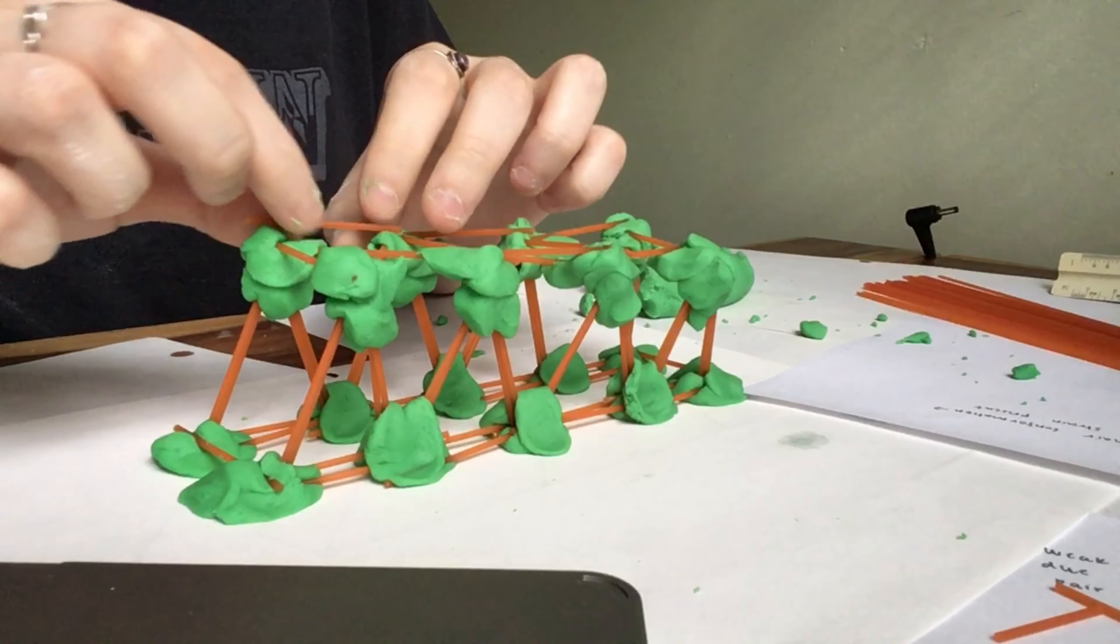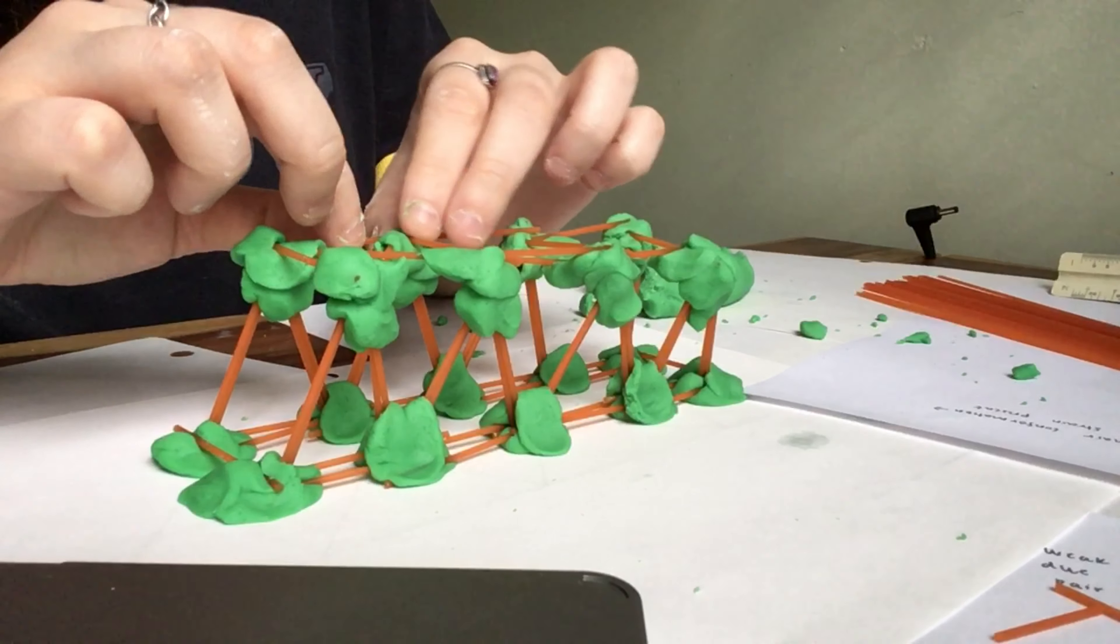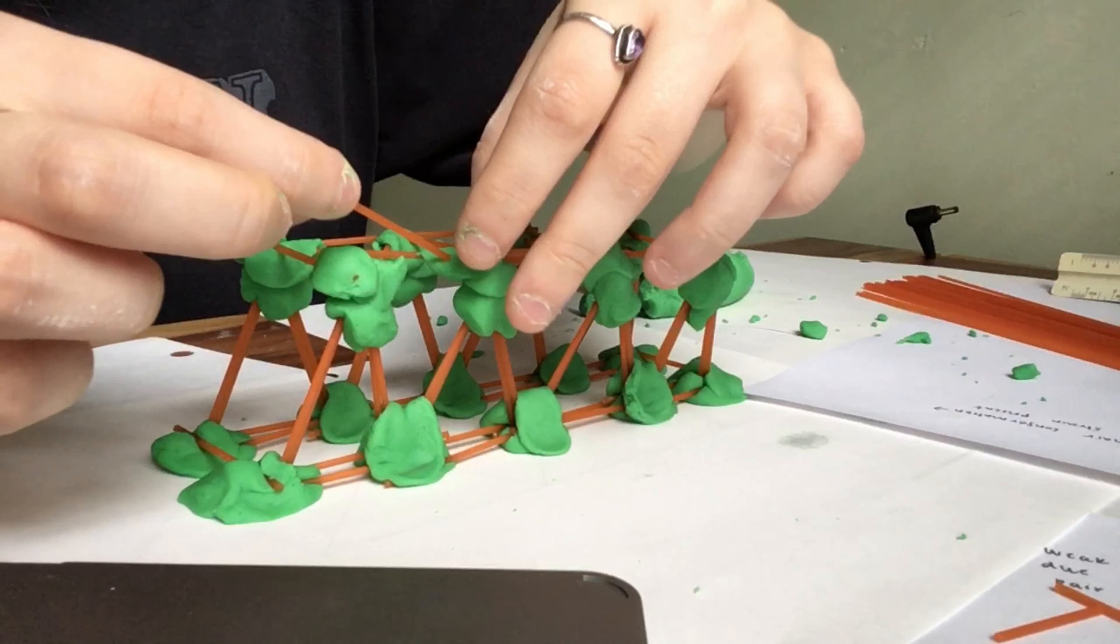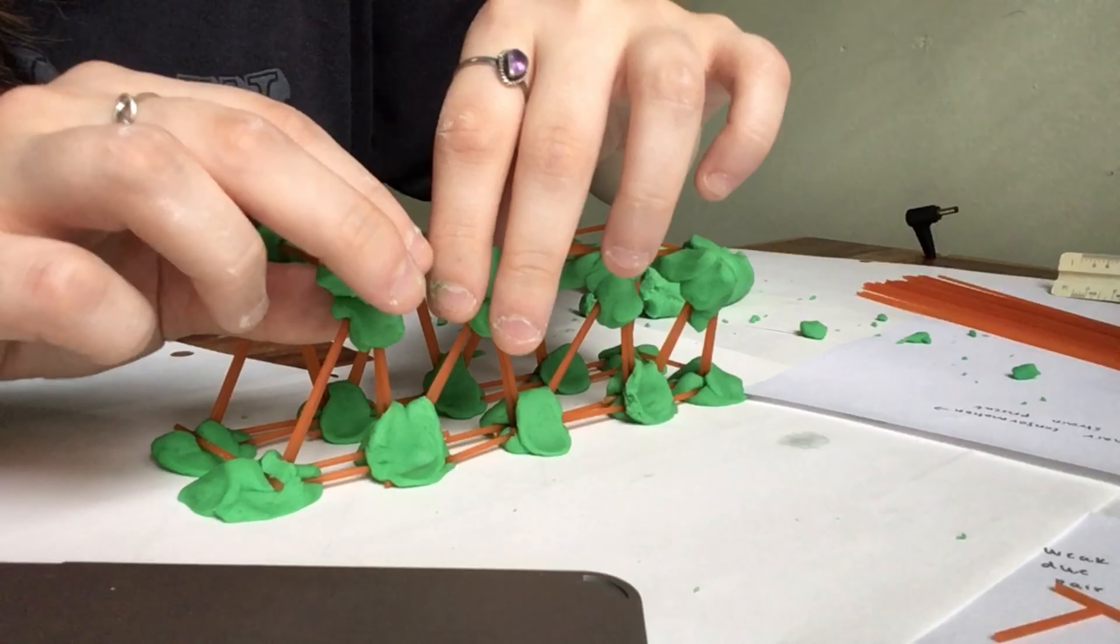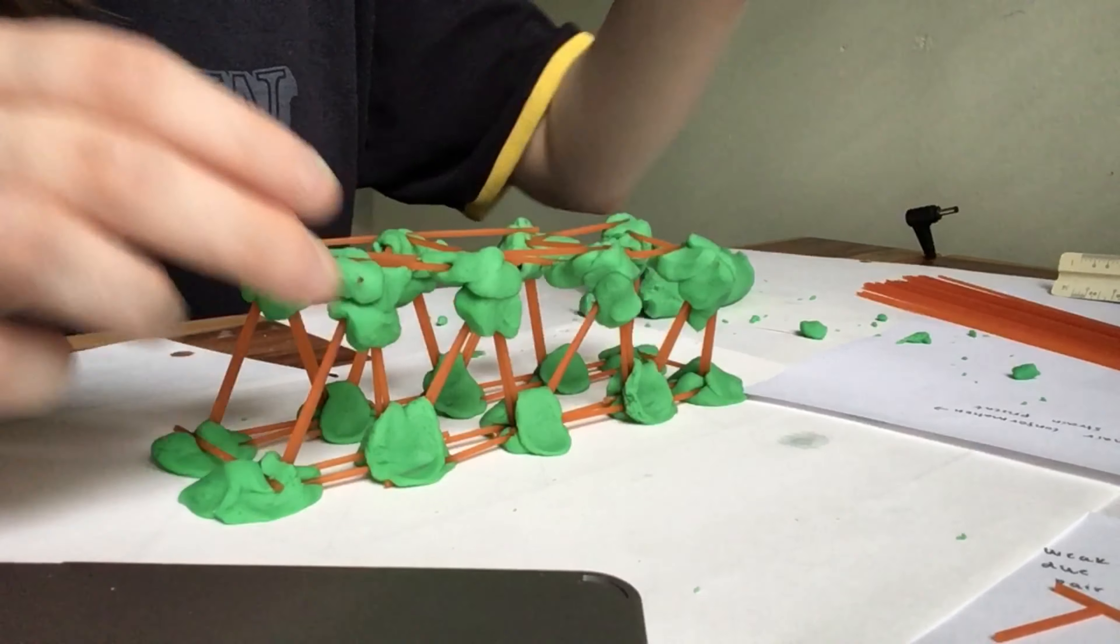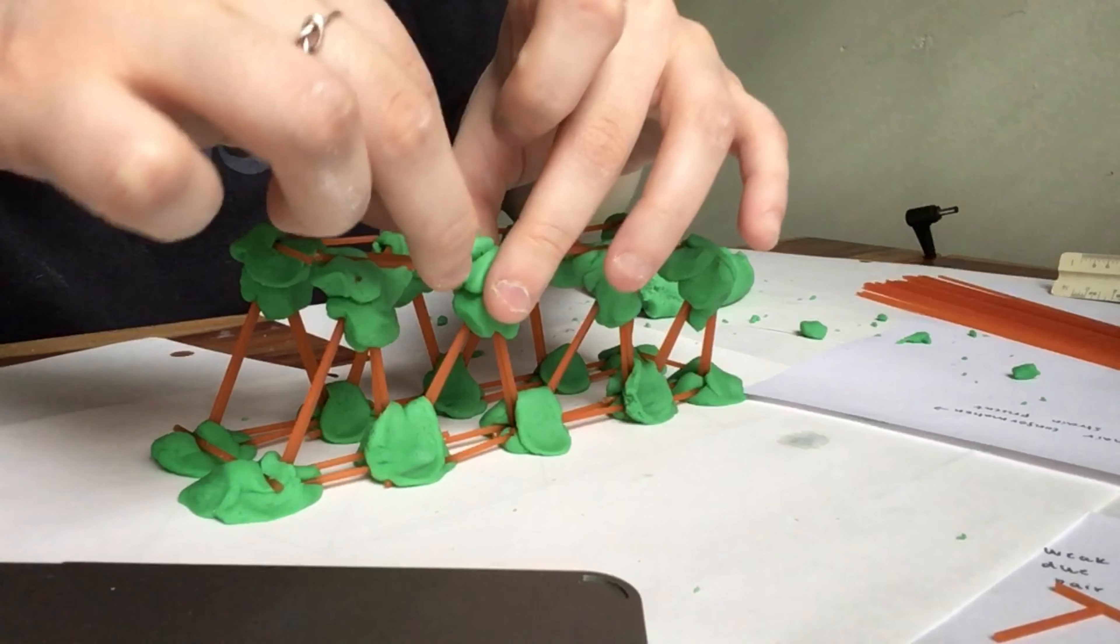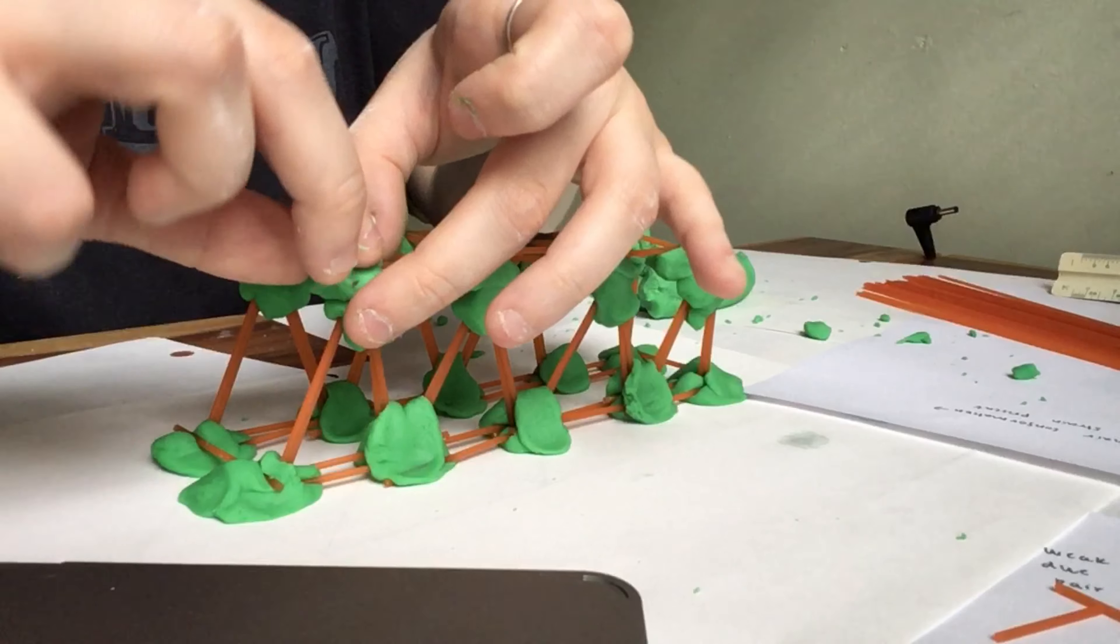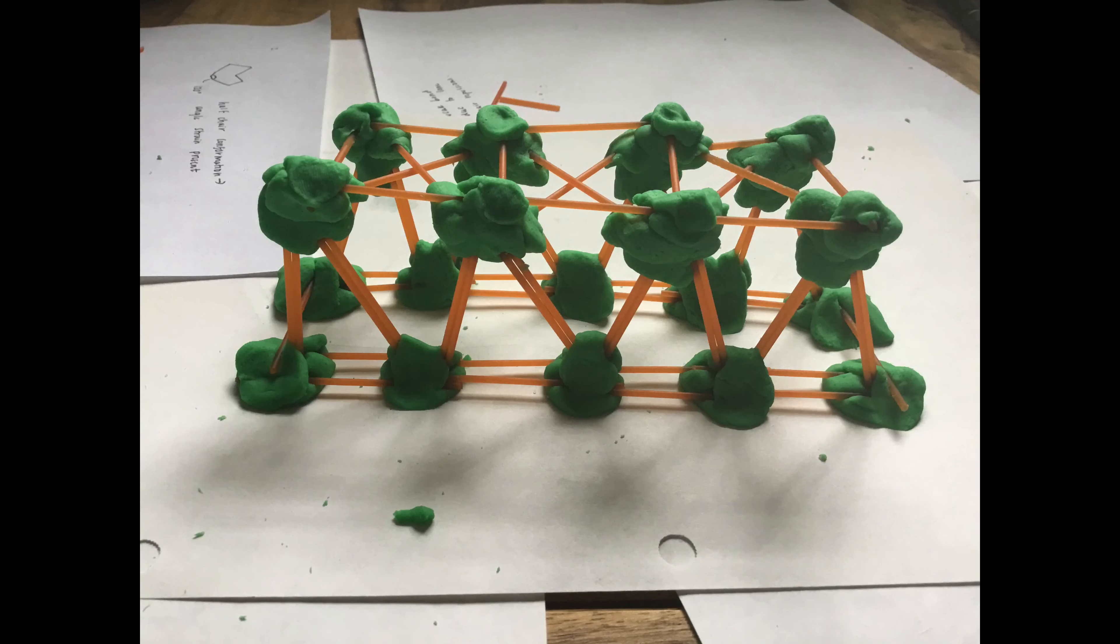So here I'm making the finishing touches on my bridge. I'm adding more pasta pieces where I think it would help with the structural integrity of the bridge, but I'm also adding more play-doh to secure those pieces so that whenever I add a load, the bridge will not just completely fall apart. And so coming up, you will see pictures of how my bridge looked, the final product.